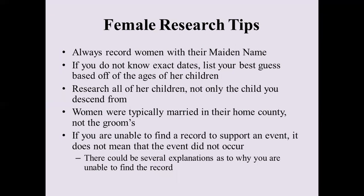If you don't know the exact dates for your ancestor, try to list your best guess based off the ages of her children. This can usually be done by guessing at least a minimum age she had to have been to have her child, and obviously she would have at least been alive until that point. Also, you want to research all of her children, not just the child that you descend from. You can find so much more information from her children instead of just looking at one child.